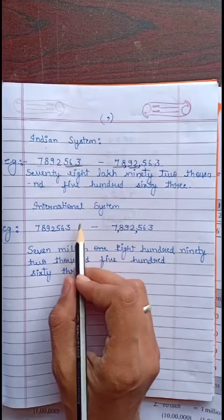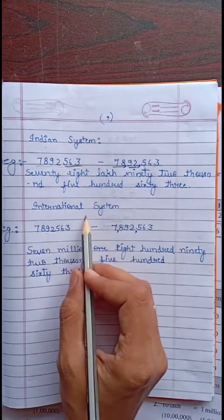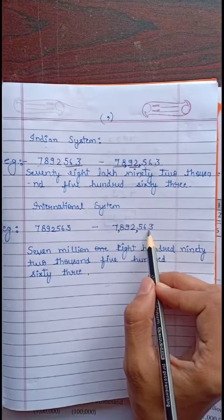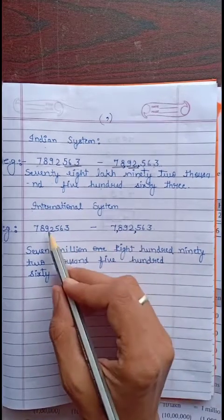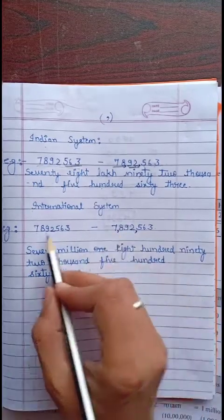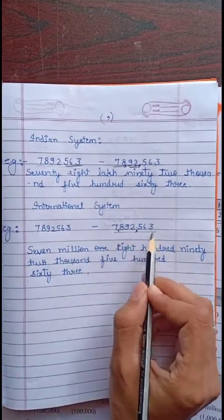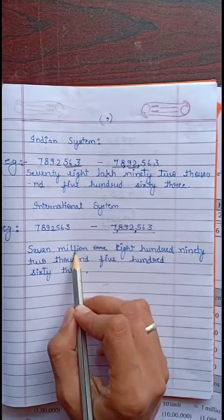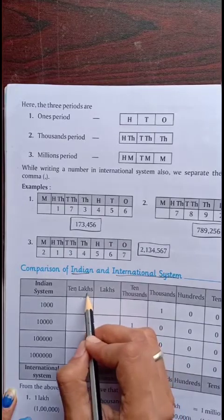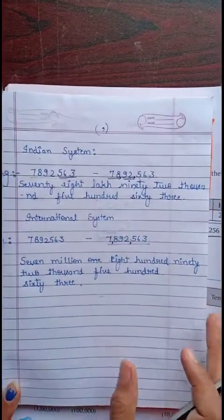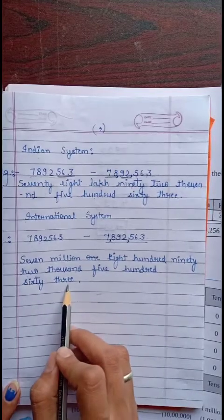Now in the international system, take the same number 7,892,563. We have to write this digit in the international system. We see the last 3 digits: 5, 6, and 3 — put comma before 5. Then again take the last 3 digits: 8, 9, and 2 — put comma before 8. Then the remaining digit is 7. So 7,892,563. The number name is seven million eight hundred ninety-two thousand five hundred sixty-three. We use million here because in the international system, we use million in place of 10 lakhs.